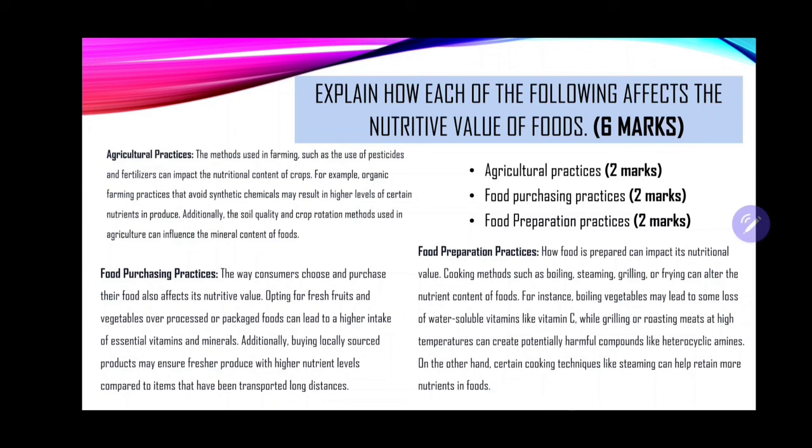Food preparation practices also impact nutritional value. Cooking methods such as boiling, steaming, grilling, or frying can alter the nutrient content of foods. For instance, boiling vegetables may lead to some loss of water-soluble vitamins like vitamin C, while grilling or roasting meats at high temperatures can create potentially harmful compounds. Cooking techniques like steaming can help retain more nutrients in food.